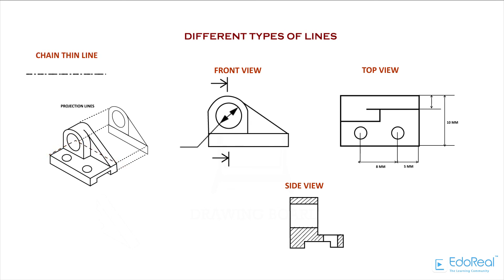Chain Thin Line. This line is used to represent central lines for circles and arcs.